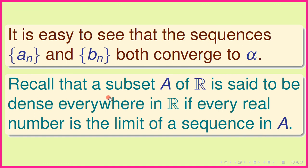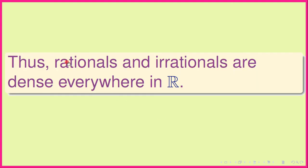Recall that a subset A of R is said to be dense everywhere in R if every real number is the limit of a sequence in A, that is, every term of the sequence lies inside the subset A. So in that sense, rationals and irrationals are dense everywhere in R.